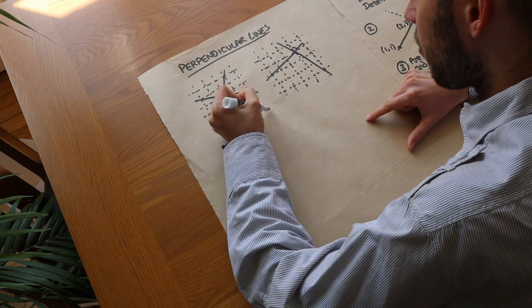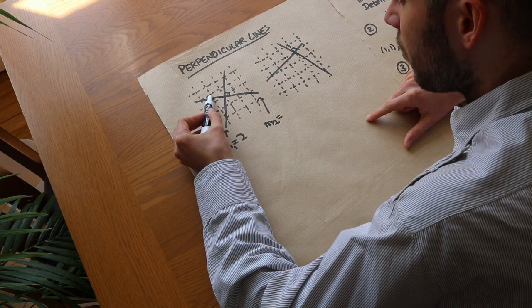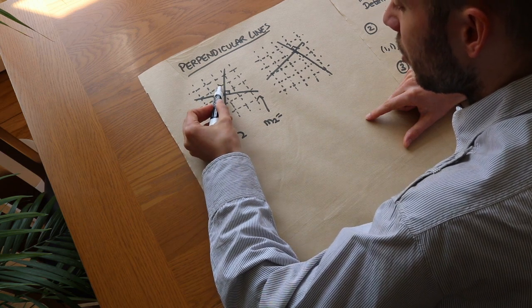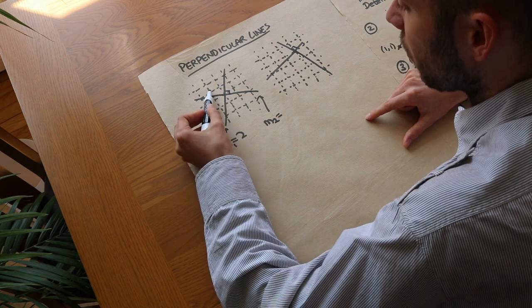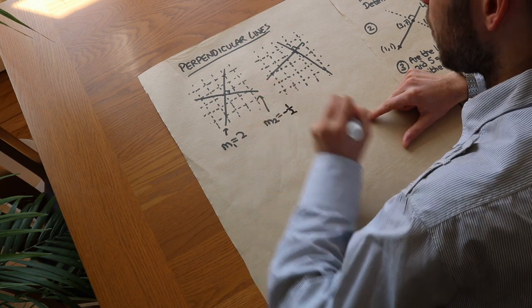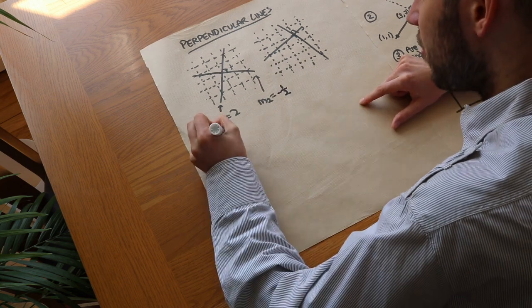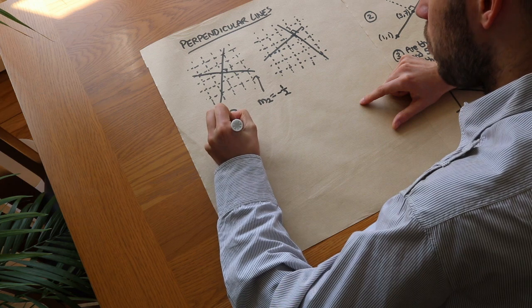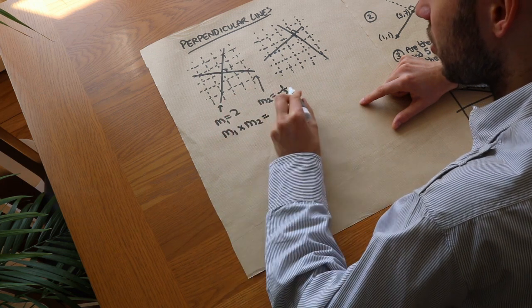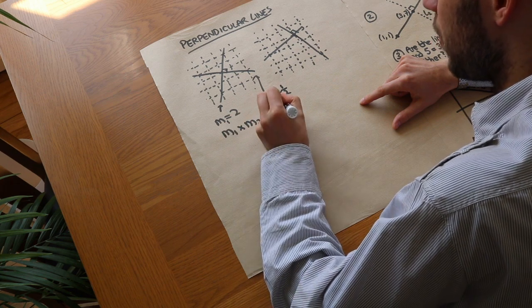What about the gradient of this second line? Each time x increases by 1, we're going down a fraction of a square. If you go two across, you're going one down, so if you go one across you're going half down — the gradient is minus a half. Now let's see what happens when we multiply these together. M1 times M2: 2 times minus a half is equal to minus 1.